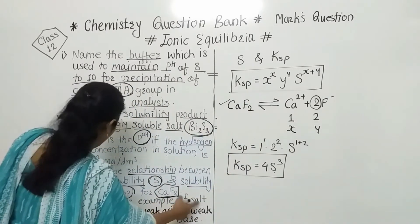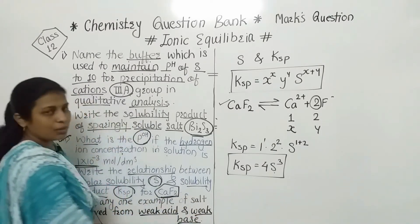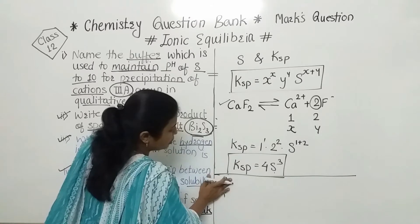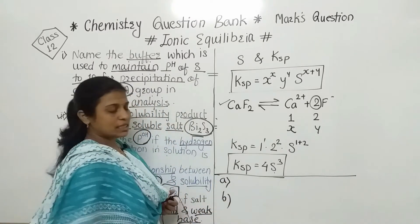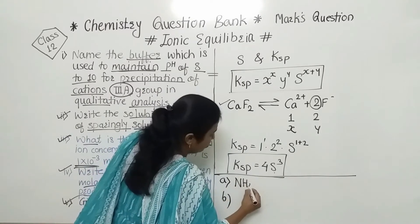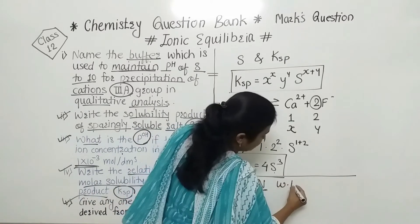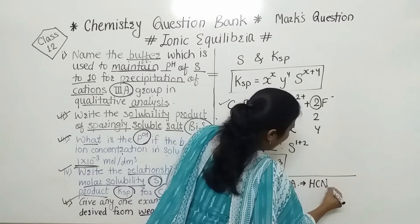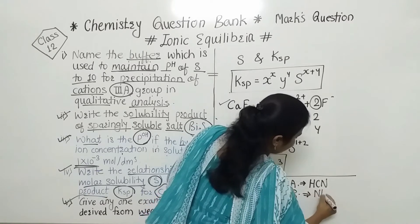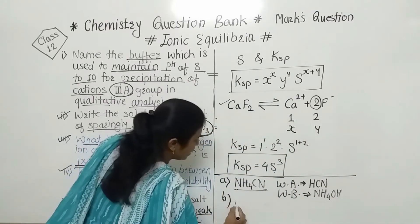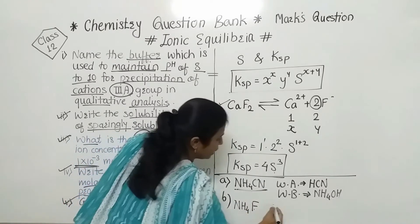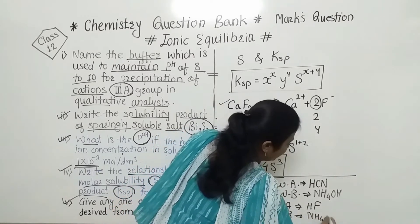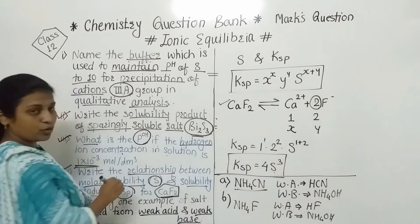Next question: give any one example of a salt derived from a weak acid and weak base. We can give two examples. First, ammonium cyanide — derived from weak acid HCN and weak base NH₄OH (ammonium hydroxide). Second, ammonium fluoride — weak acid is HF and weak base is ammonium hydroxide. We have now completed 5 questions of the 1-mark section.